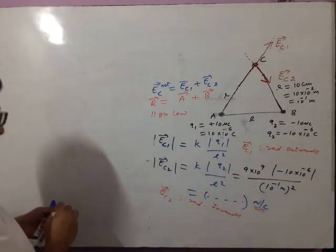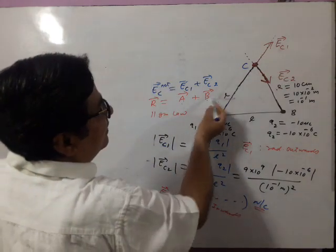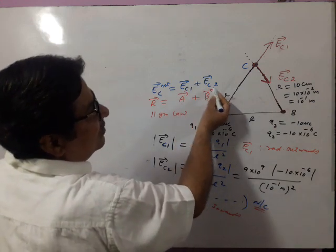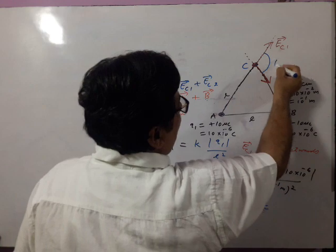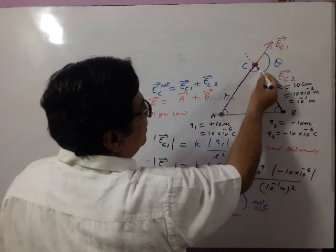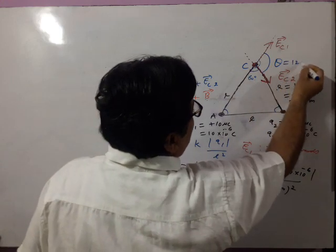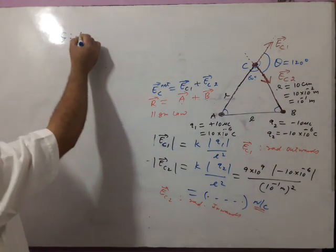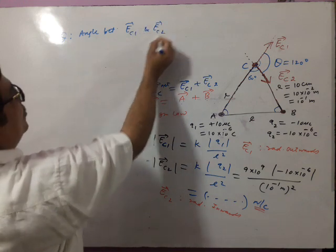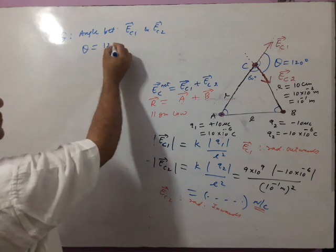As per parallelogram law, at point C there are two vectors EC1 and EC2 joined from tail to tail. Angle theta between EC1 vector and EC2 vector — since it is an equilateral triangle, each internal angle is 60°. So this total is 180°, and 180° minus 60° gives theta equals 120°. Theta is the angle between EC1 and EC2 when joined tail to tail — it is 120 degrees.